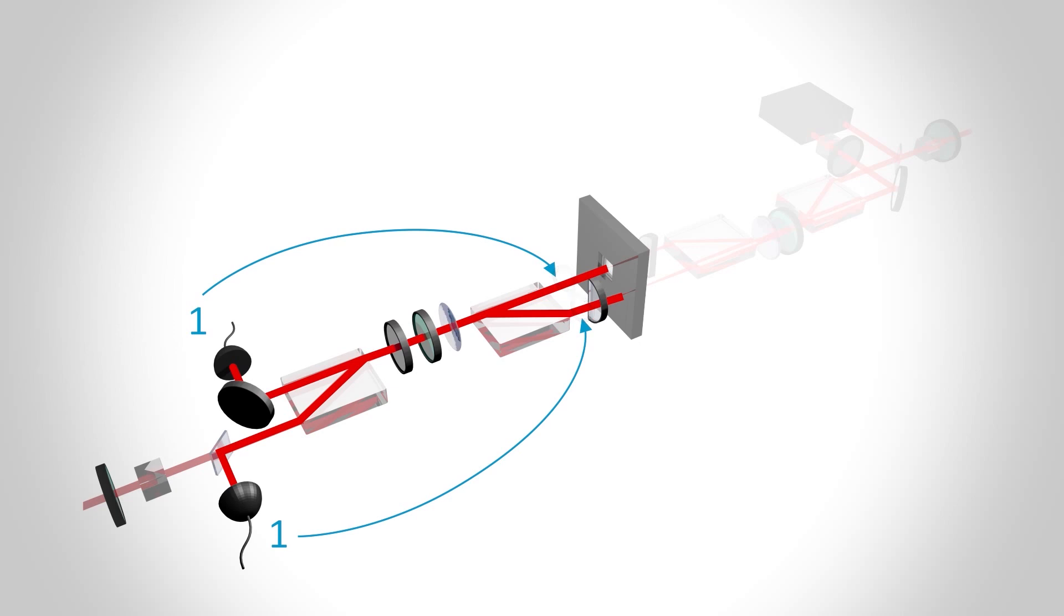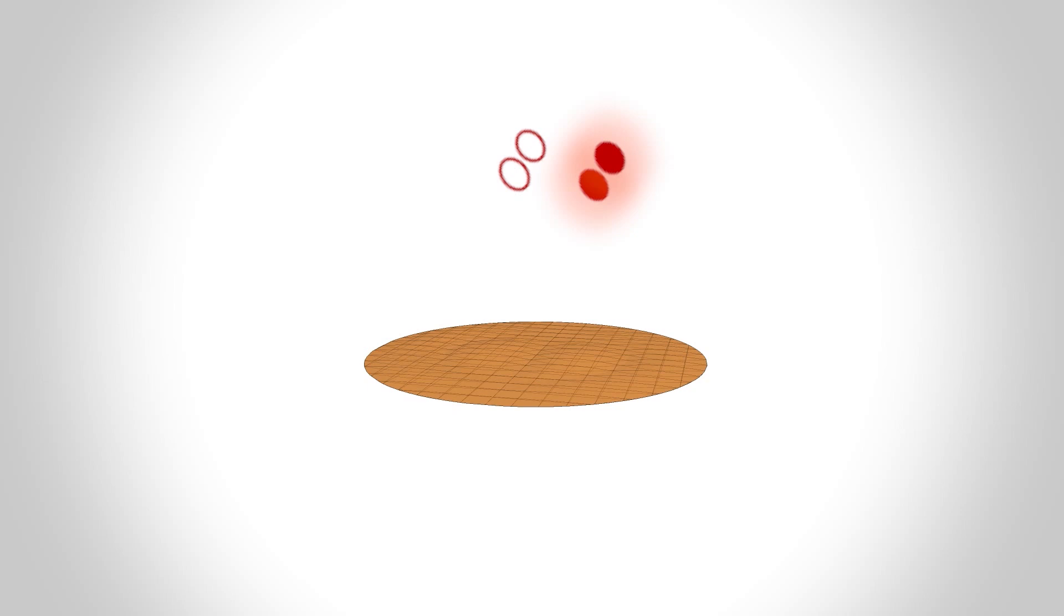This state has two photons on one side and zero on the other, or vice versa. This means the membrane receives a quantum superposition of nothing and a two-photon kick, so if the membrane was standing still in the beginning of the experiment, it would now be vibrating and standing still at the same time.